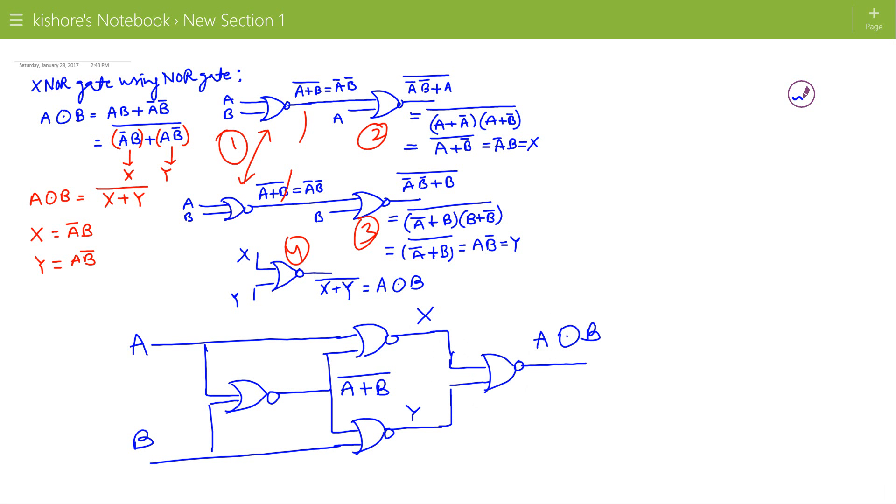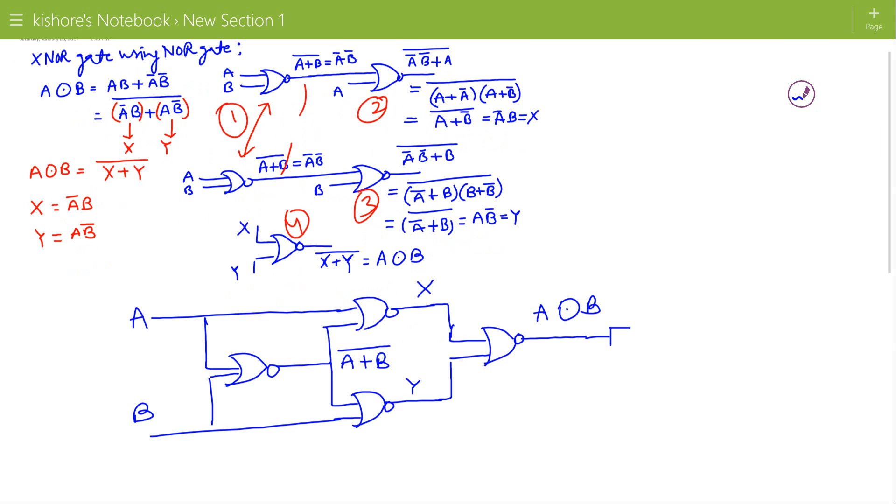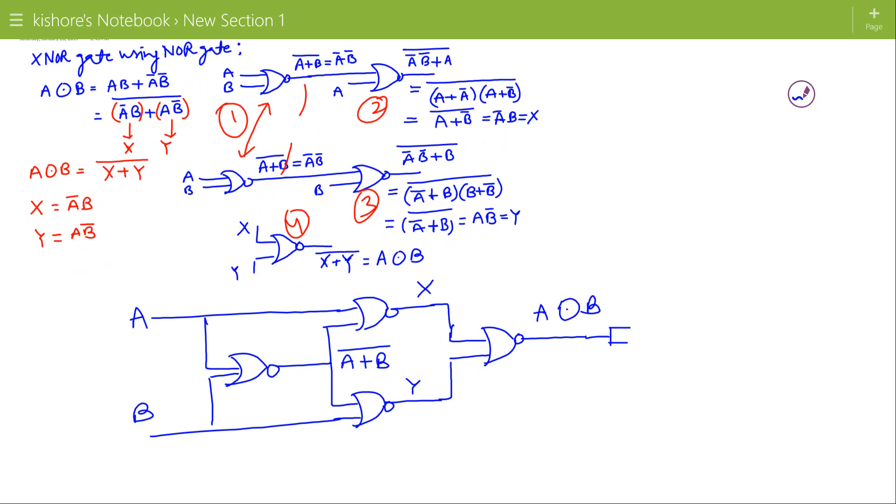Total four NOR gates are required to realize exclusive NOR gate. And if I have to make exclusive OR gate, then one more NOR gate is required which will act as inverter, and this will be A XOR B, which is complement of A XNOR B.